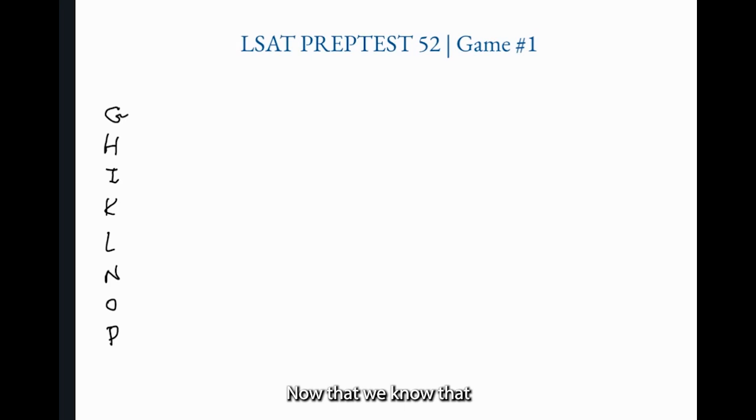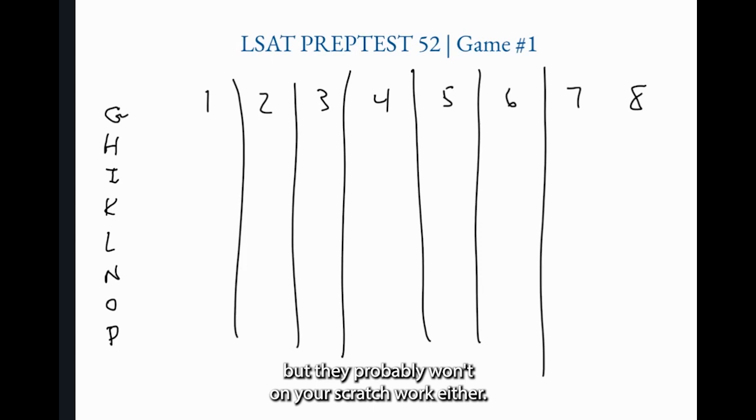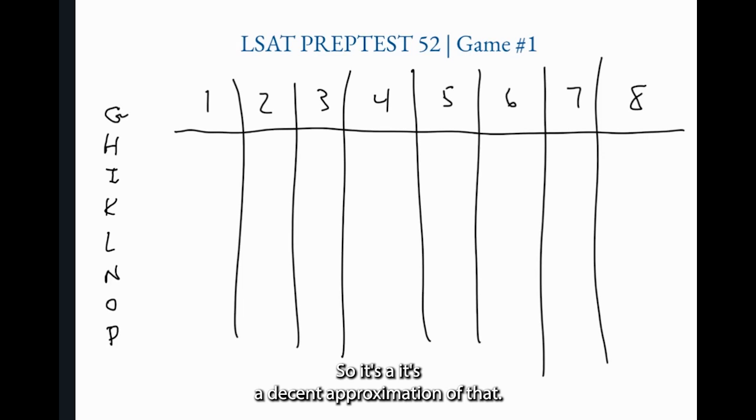This is what I like to call a thank goodness boundary because thank goodness there are no ties, there's no complication here. It really is simply eight in a row, one after the other. Now that we know that, we're ready to lay out our columns. I do recommend numbering them at the top and then drawing down. I recommend making fairly deep columns down your scratch work for reasons that will become clear in a moment and then especially as we go on to the questions.